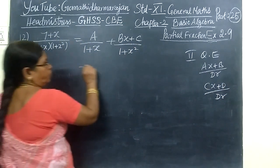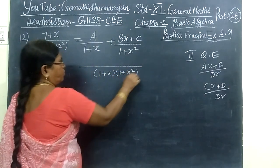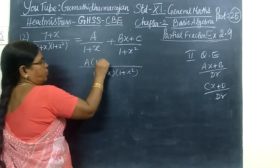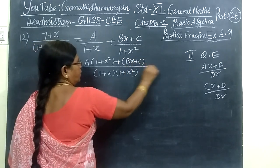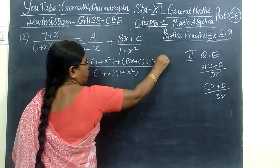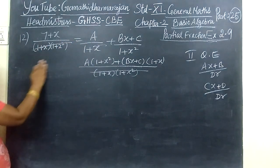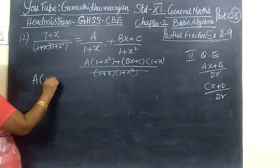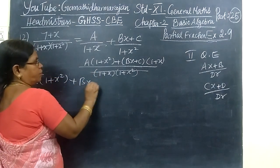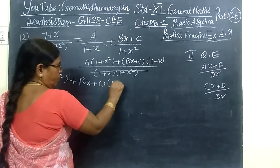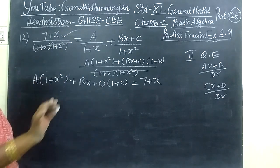For this you take LCM. So 1 plus x, 1 plus x squared. You cross multiply. So A bracket 1 plus x squared, then Bx plus C into 1 plus x. The denominator gets cancelled, so you write the remaining: A times 1 plus x squared plus Bx plus C times 1 plus x equal to 7 plus x.